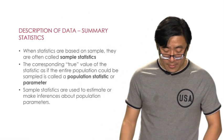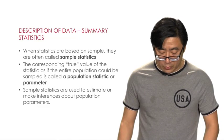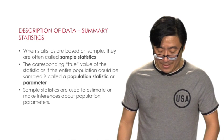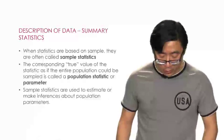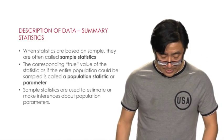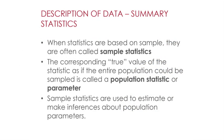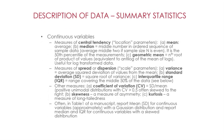We can also use summary statistics to describe the data. When statistics are based on a sample, they are often called sample statistics. The corresponding true value as if the entire population could be sampled is called a population statistic or parameter. Sample statistics are used to estimate or make inferences about the population parameter.